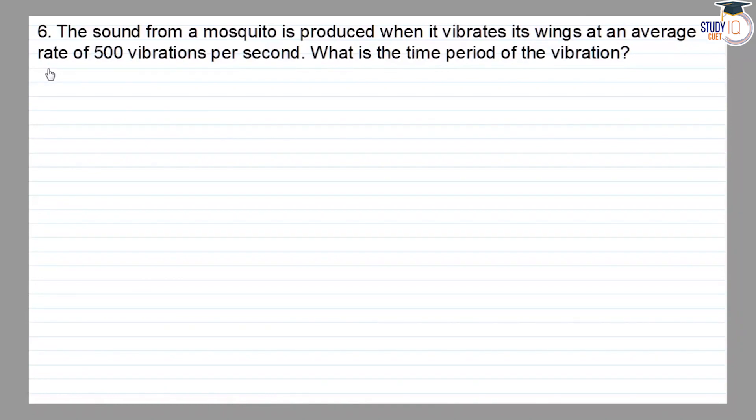Class 8 NCERT Chapter 13 Question 6: The sound from a mosquito is produced when it vibrates its wings at an average rate of 500 vibrations per second. What is the time period of the vibration?